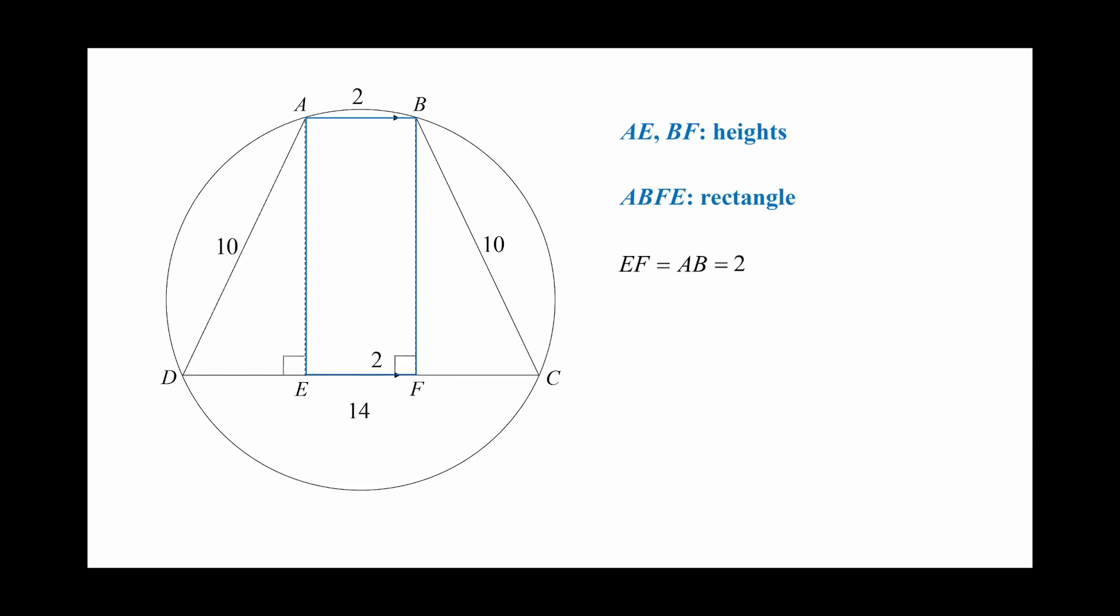How about the length of the red side DE? Because ABCD is an isosceles trapezium, therefore DE is equal to FC which is 6.